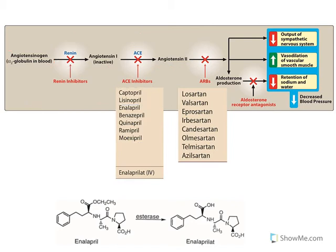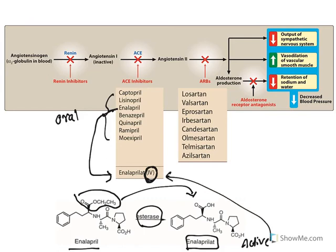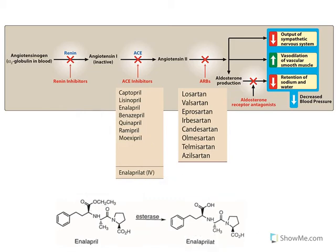All ACE inhibitor drugs are taken orally. Enalapril's active form is enalaprilat, which is taken intravenously — this is the only intravenous ACE inhibitor available. Enalapril has an ester group that is converted to an acid derivative by the enzyme esterase, making enalaprilat the active IV form. So all the '-prils' are converted to '-prilat' active forms. The next class is angiotensin receptor blockers — sartans: losartan, valsartan, irbesartan, candesartan — all are angiotensin receptor blockers.